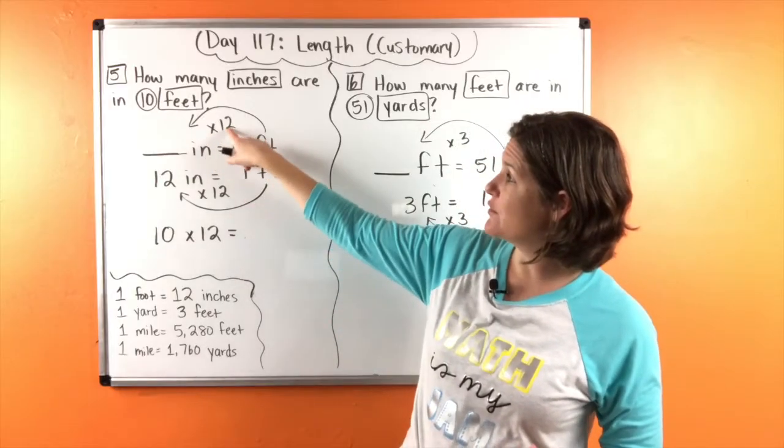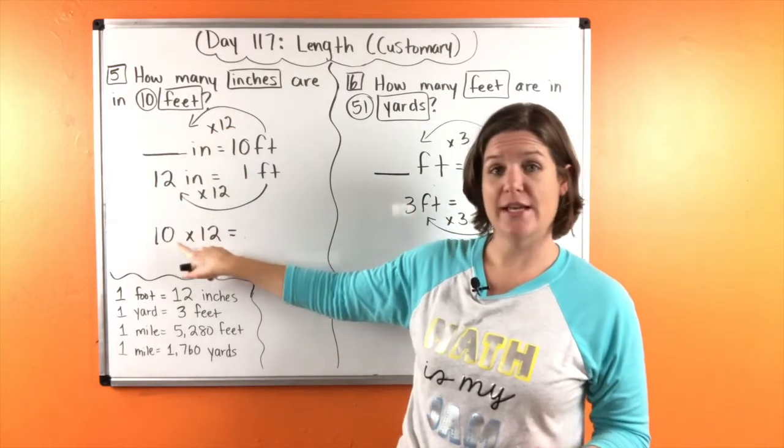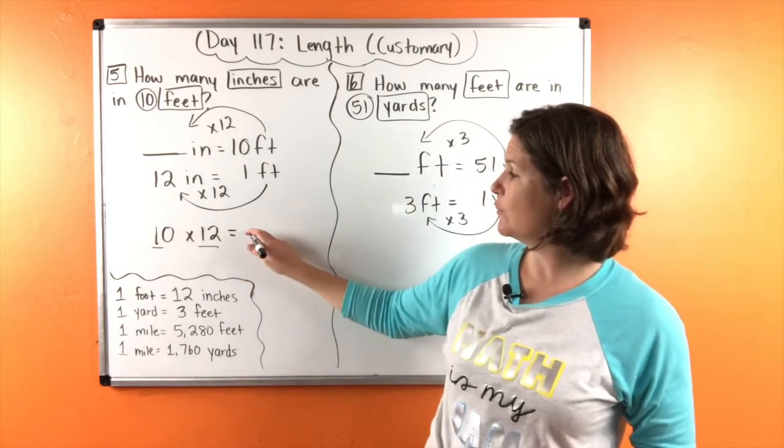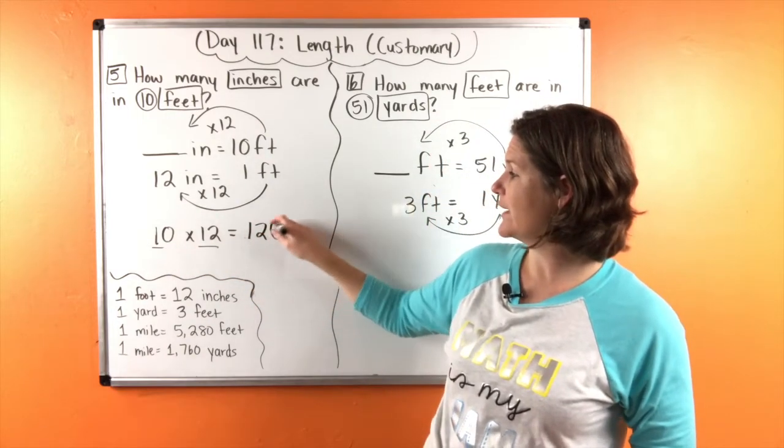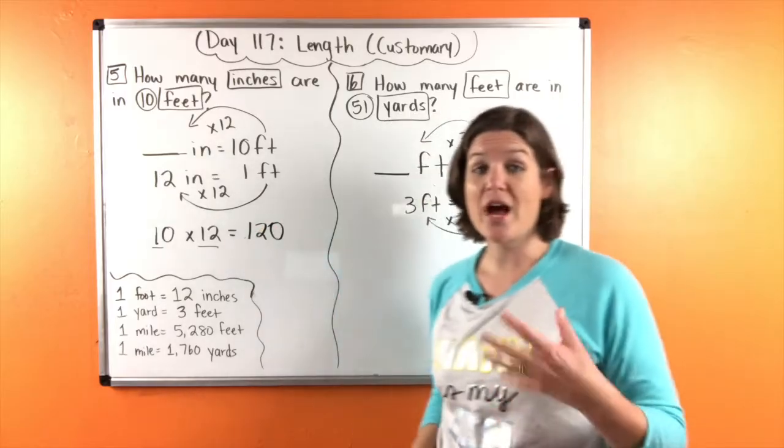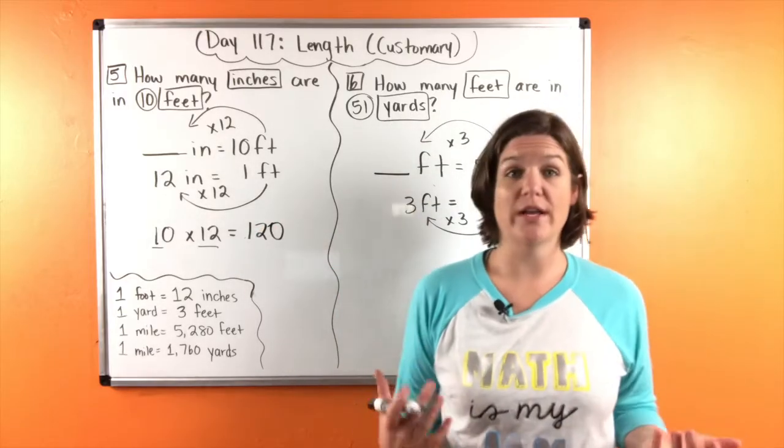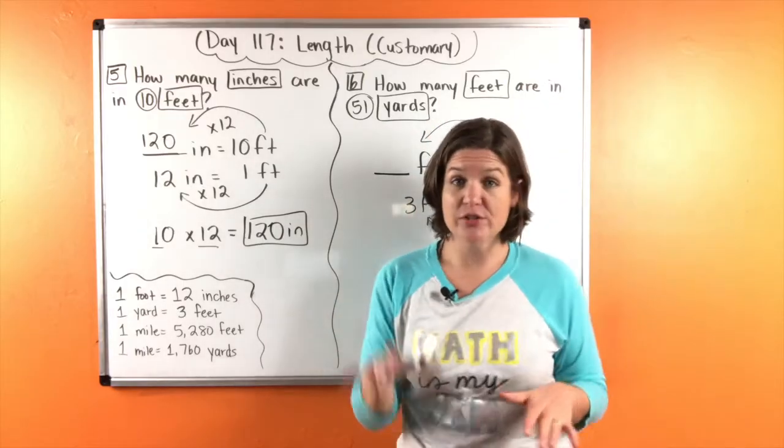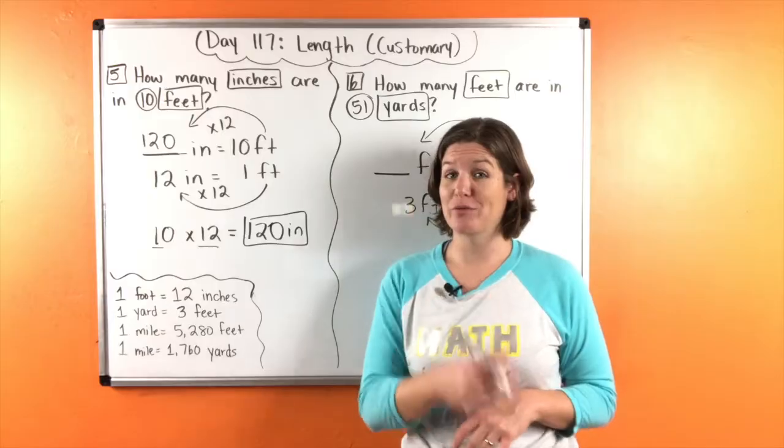And now 10 times 12. 10 times 12 is... Well, one times 12 would be 12 and then we add a zero. So 120 what? Inches. Okay, pause the video if you need to make any corrections to your work and then press play when you're ready to take a look at number six.